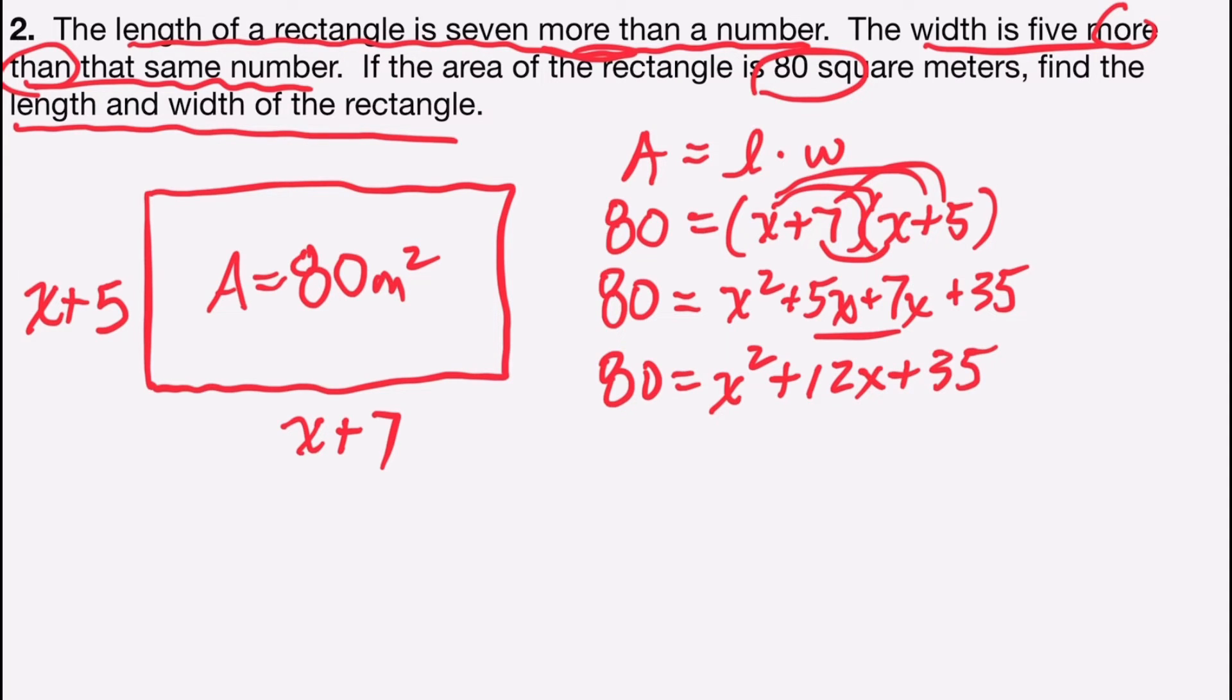Now I have a quadratic equation because of the square on the x. So I'm going to set one side equal to zero by subtracting 80 from both sides. So zero will be equal to x squared plus 12x minus 45.